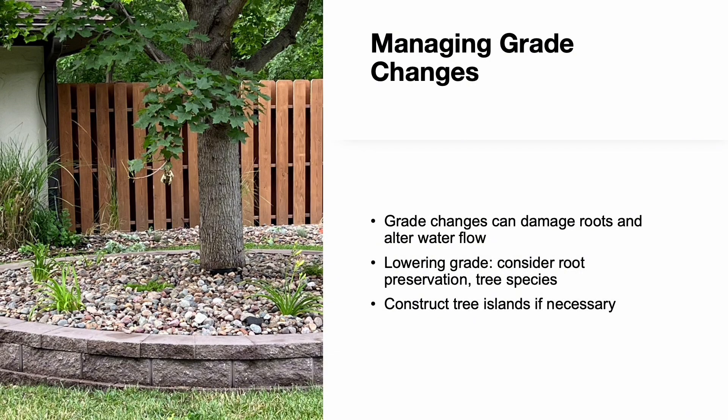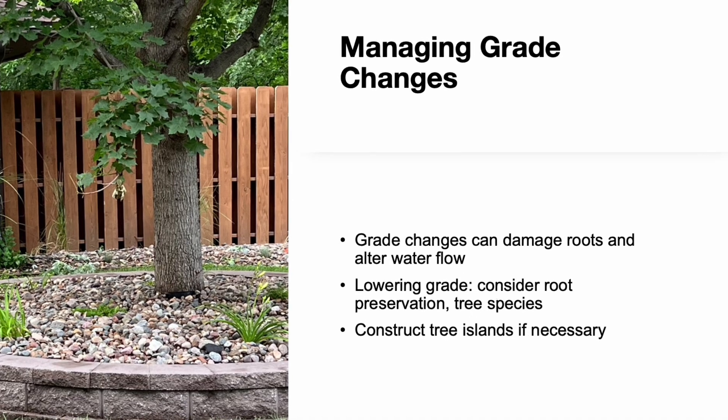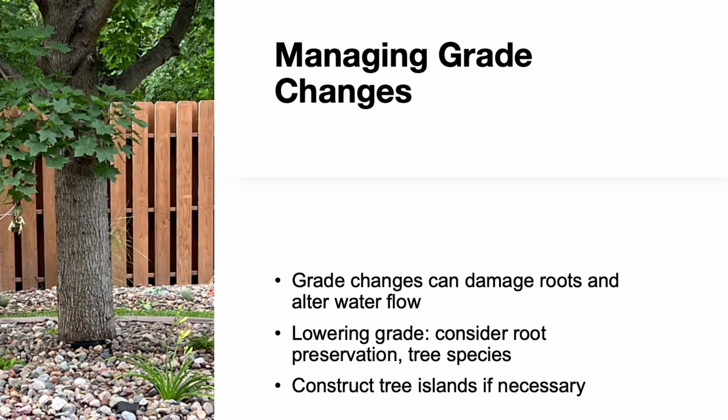Even small changes in grade can devastate a tree by severing roots, compacting soil, or redirecting water flow. If grading is necessary, the tree's survival depends largely on how much of the root system remains intact. Other factors include species tolerance, soil condition, and irrigation. If grading must occur around all sides of the tree, consider creating a tree island by building a retaining wall around it. This allows the tree to stay at its original grade, though it sacrifices roots beyond the wall. The more roots you preserve, the better the survival chances.